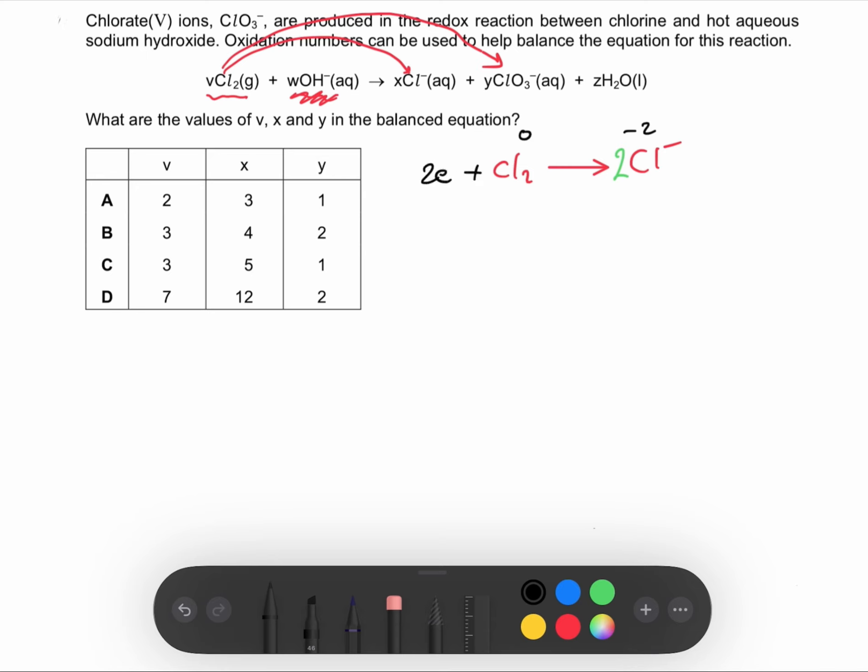Now let's balance the second equation. We start with Cl₂ changing into ClO₃⁻. The number of chlorine atoms are not equal—here we have two and here we have only one, so we multiply this by two. At this point we have two chlorine atoms, but we have six oxygen atoms total. How can I add oxygens? We add it in terms of water, so we have to add six water molecules.